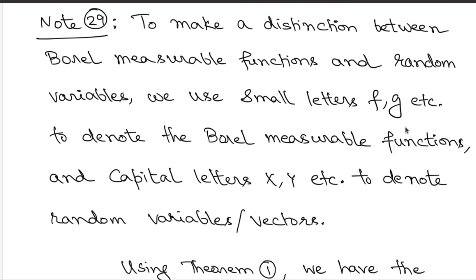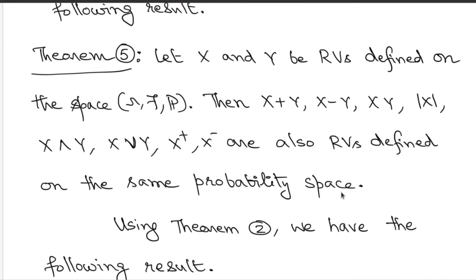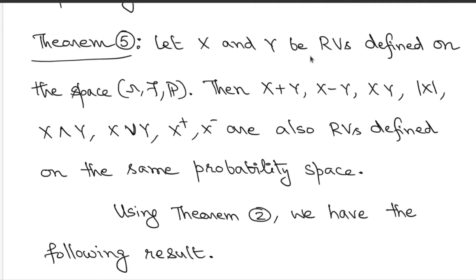To distinguish this fact, we use small letters f, g to denote Borel measurable functions, and capital letters X, Y etc. for random variables and random vectors. Since random variables are Borel measurable functions, we go back to Theorem 1 on algebraic properties. Take X and Y to be random variables defined on the same probability space — you can talk about addition, subtraction, and so on. These operations give Borel measurable functions by Theorem 1, and since they are defined on the same probability space, we refer to them again as random variables.